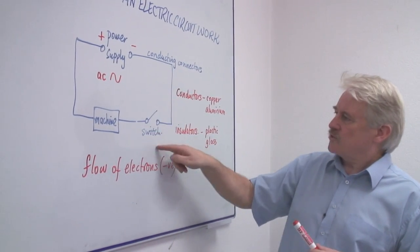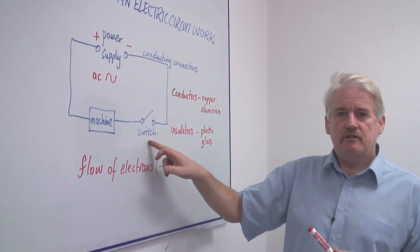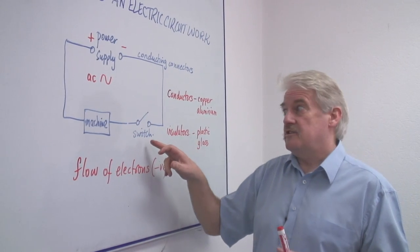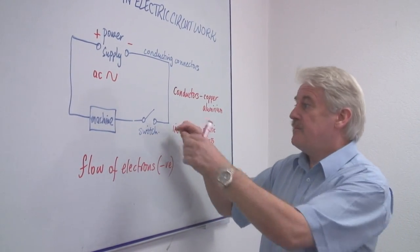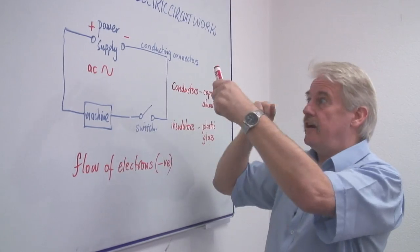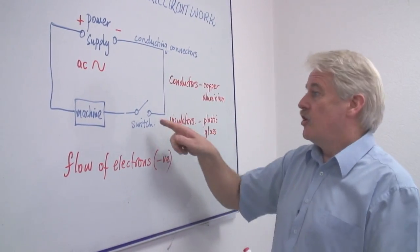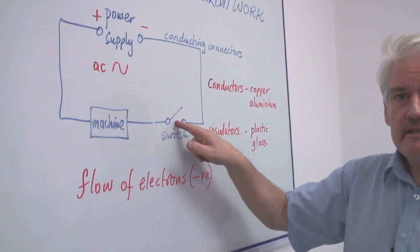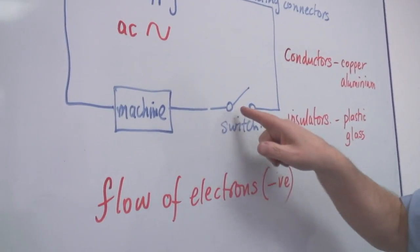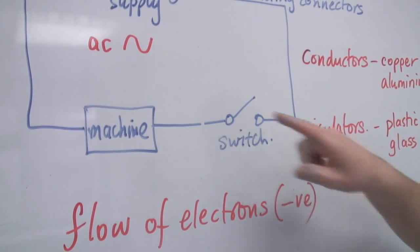But in this, what we do is we put a switch. And a switch is just a simple device. It can simply be that the two pieces of wire are actually attached together and then separated. You break the circuit. You break the circuit by separating these two pieces of wire.